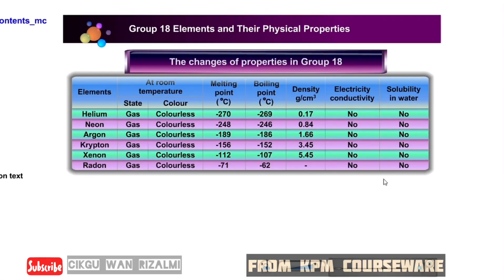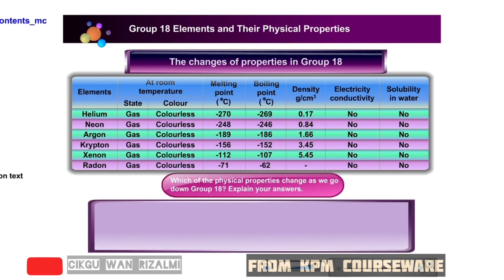The changes in physical properties in group 18. Look at the table. The diagram lists the changes of physical properties of the elements as we go down the group. Can you describe the changes in the physical properties of the elements as we go down the group?